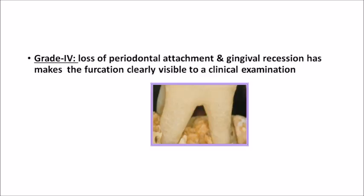Grade four: loss of periodontal attachment as well as gingival recession, making the furcation clearly visible to clinical examination. There is complete bone loss from the furcation area as well as soft tissue loss, meaning you can see clinically that the furcation is involved and observe the bone loss from the furcation area.